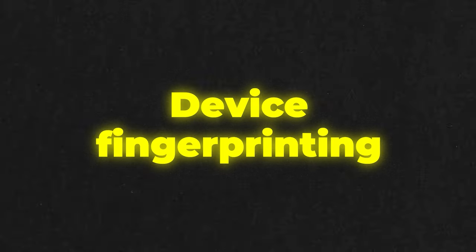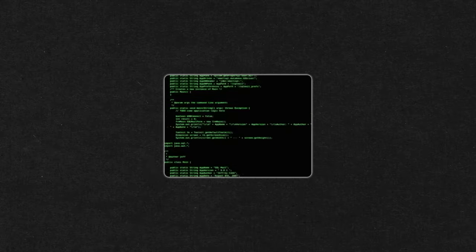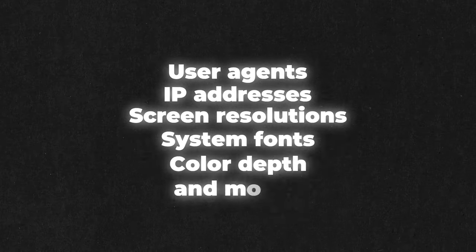Device fingerprinting is more comprehensive. It collects a range of data from your device, including user agents, IP addresses, screen resolutions, system fonts, color depth, and more. This process uncovers even the minute media devices on your computer, like your video and audio card.